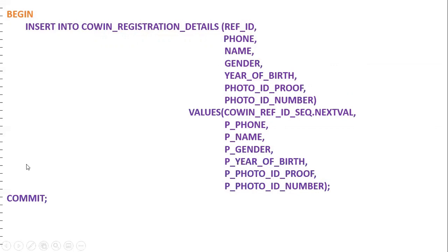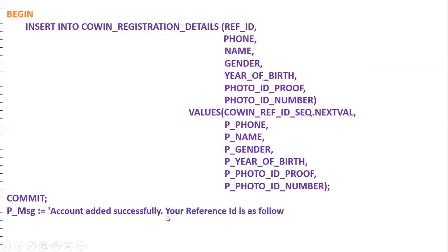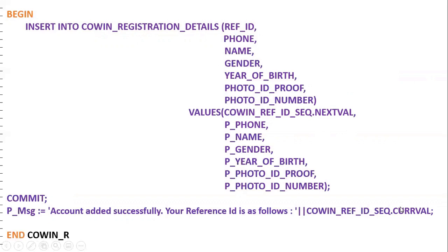After the commit, p_message is set to display 'Account added successfully. Your reference ID is as follows.' To access the current sequence value, we use sequence_name.CURRVAL, and for the next value we use sequence_name.NEXTVAL. Sequences are very important in real-time for primary key generation. NEXTVAL and CURRVAL are the pseudo columns available for a sequence. This is the end of the procedure.